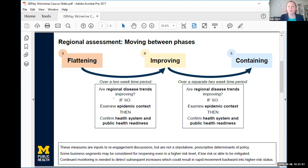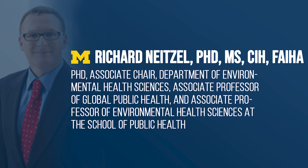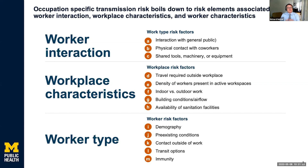A simple curve or line trending down will sometimes mask problems — the situation on the ground may be better or worse than what the numbers suggest, based on what local hospitals and local public health professionals tell you. When we look at workplaces, especially in a state with as diverse an industrial base as Michigan, we want to think about what characteristics about workplaces might make them more or less at risk of having an outbreak or transmission of the virus.